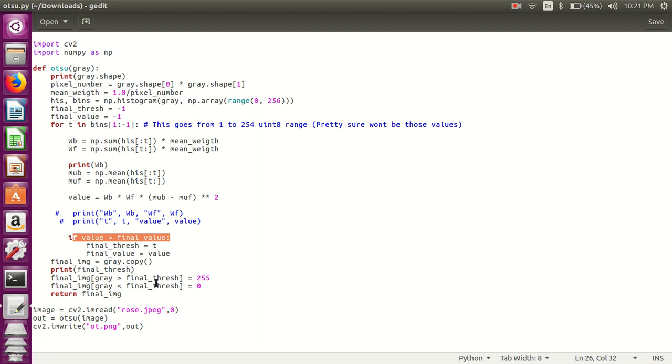If this value is greater than final_thresh, then we will set it as white, otherwise black. Thus we obtain the output in ot.png. So this is all about programming.